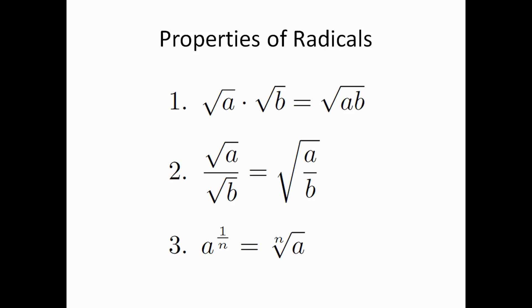The second property is essentially the same thing except for division. It says the square root of A over the square root of B is equal to the square root of that entire quotient A over B. So you can combine that quotient under one radical.